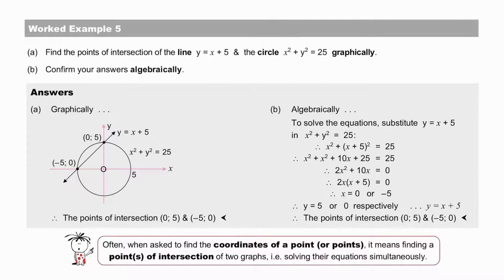In worked example 5, in A, we find the points of intersection of the line and a circle graphically. Simply sketch the graphs, and then read off the points of intersection.